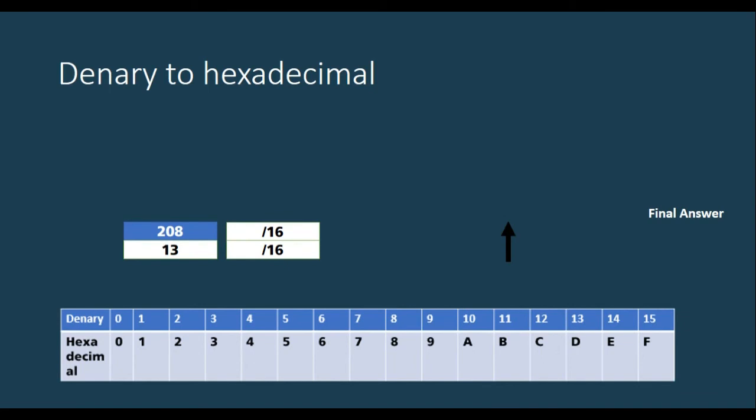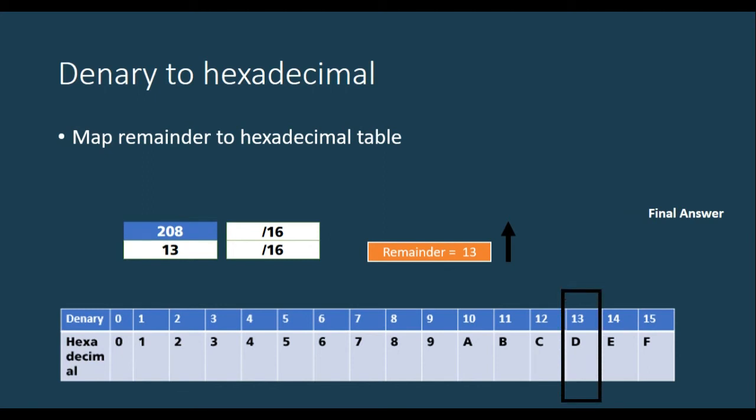Now, you can just map it to your table. So 13, this is mapped to D. And then 0, this is mapped to 0. Therefore, your final answer will be D0.